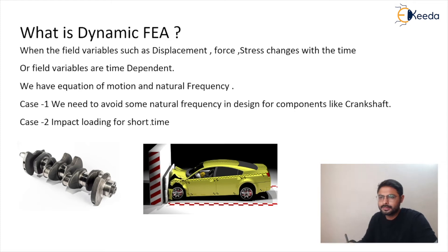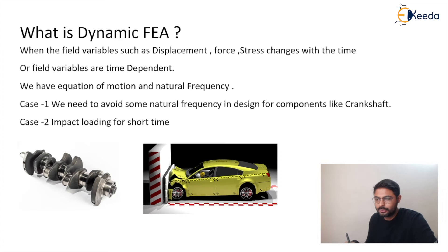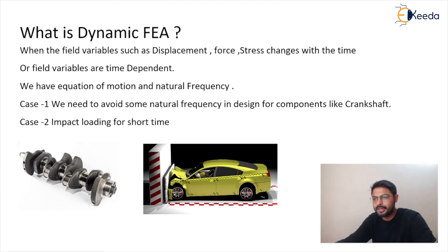The first case is for a longer period of time, where vibrations are produced over time. The second case considers impact loading, which occurs for only a very short time. For example, a car getting collided with some part causes vibrations that pass through the body of the car chassis. For just a fraction of a second, the impact loading is on the first portion and after that it passes through the body. Due to the motion we have values of variables that depend on time.